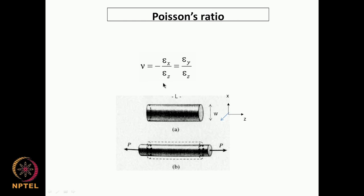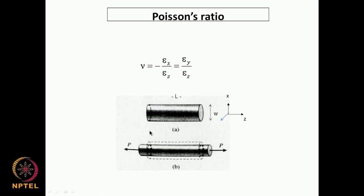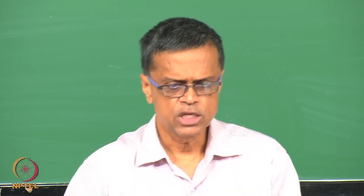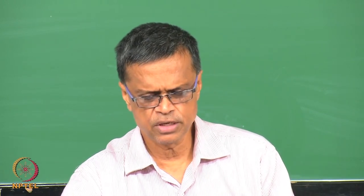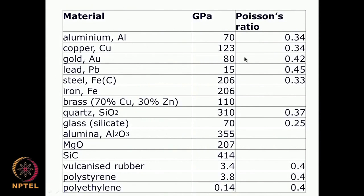Poisson's ratio is very important in medical applications — I will show you some examples. It is also very important for us to know for materials whether they are metals, rubber, or plastics. This table gives you an approximate idea of what the Young's modulus and Poisson's ratio could be.